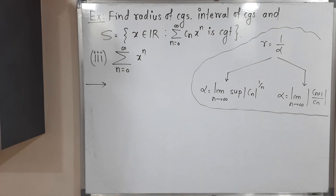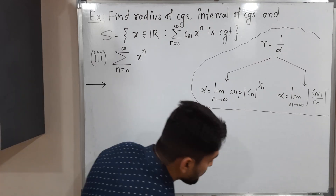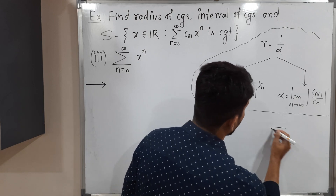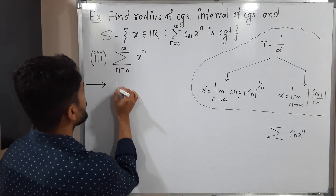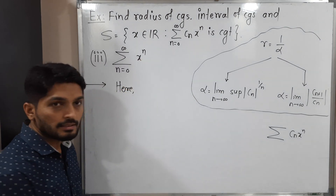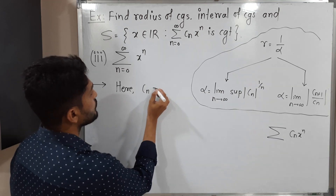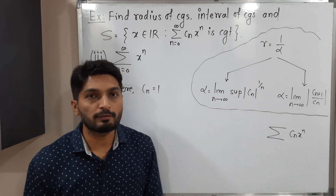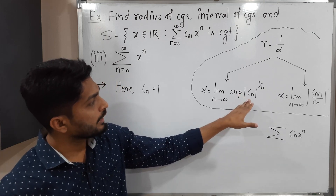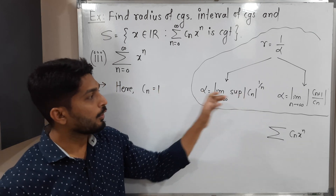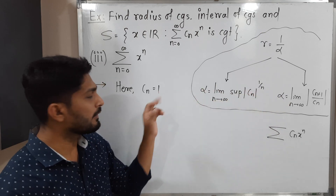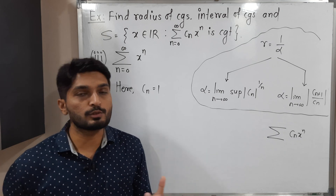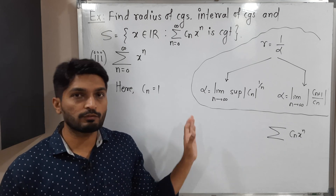The third power series is very simple: summation x raised to n. Comparing with the standard form Cn x raised to n, Cn is the multiple of x raised to n. Since nothing else is there, Cn equals 1. Now the question is which formula to use. We can go for the first formula since Cn is simply 1, and 1 raised to 1/n is 1 itself, so we can easily solve using the first formula.